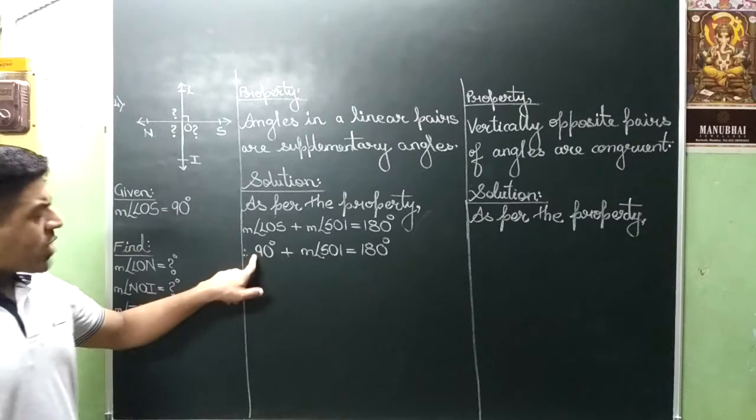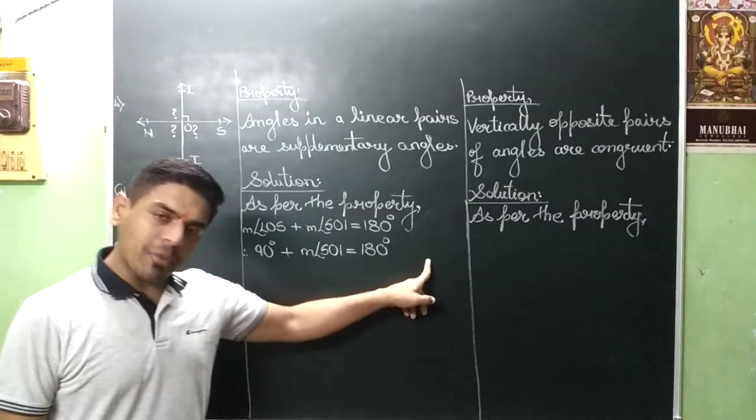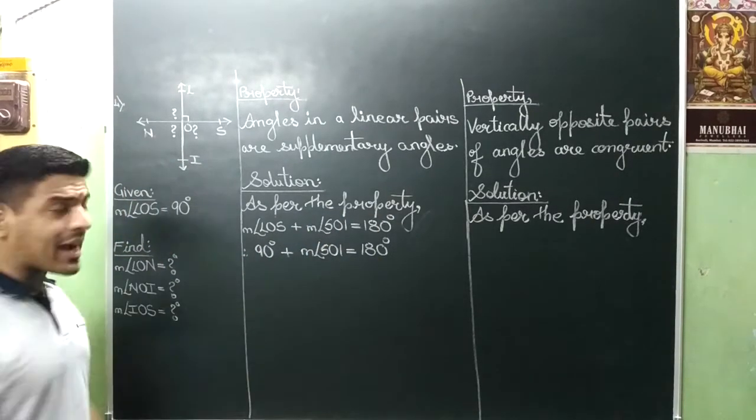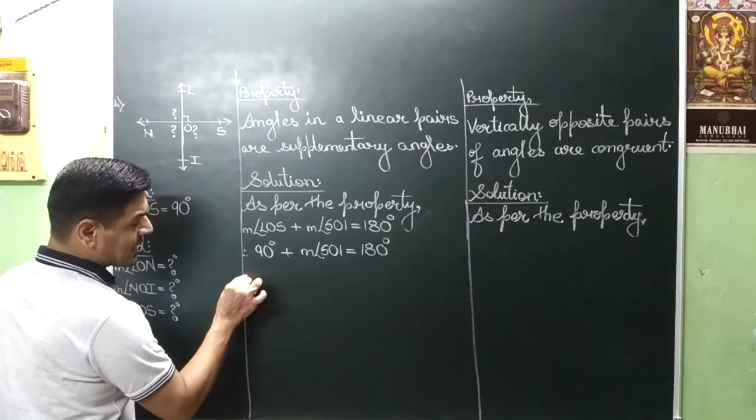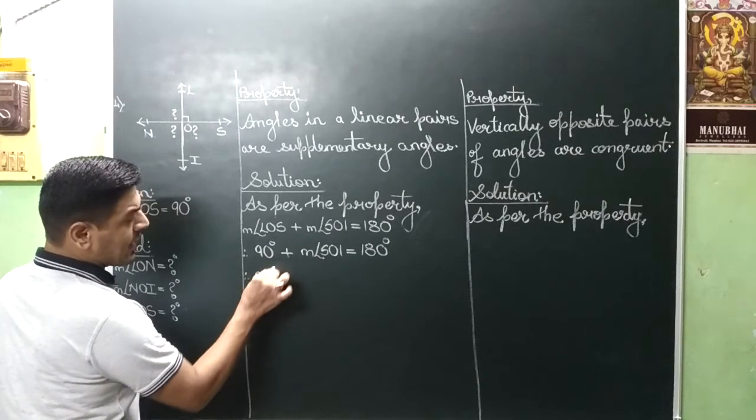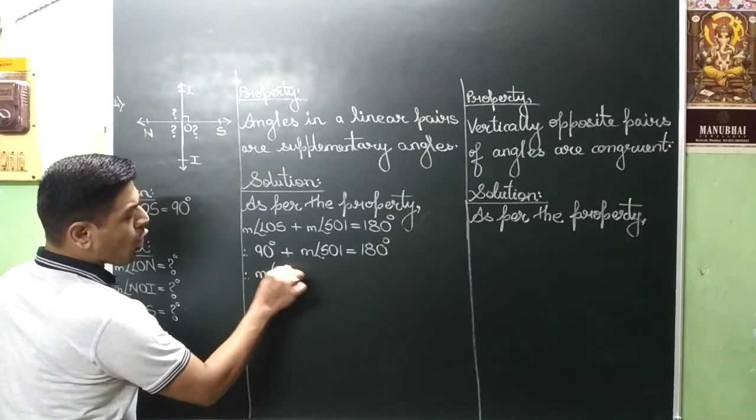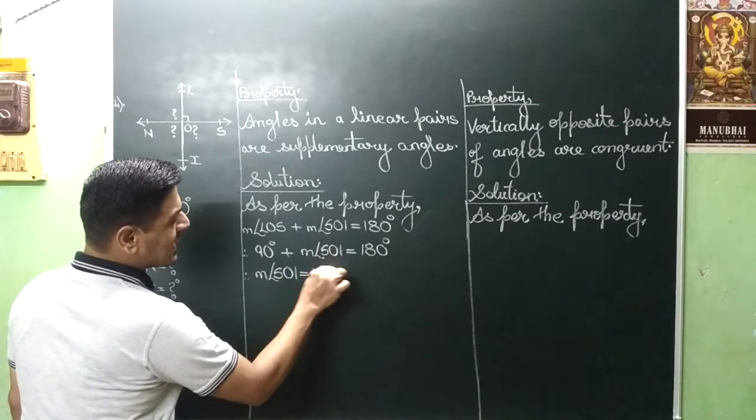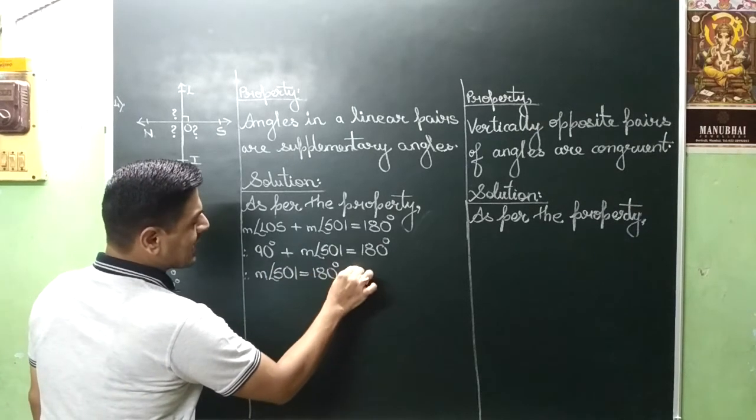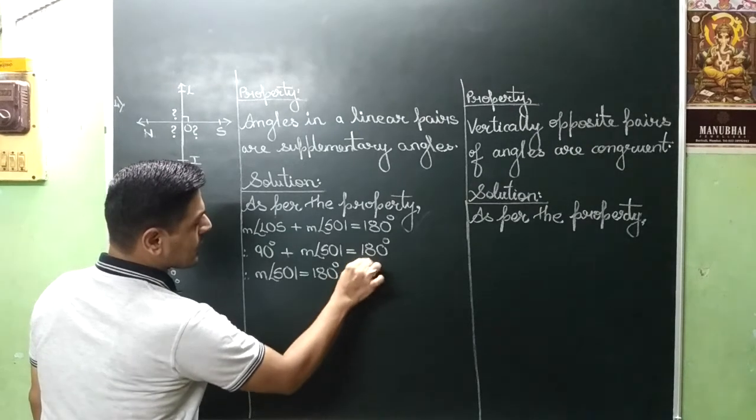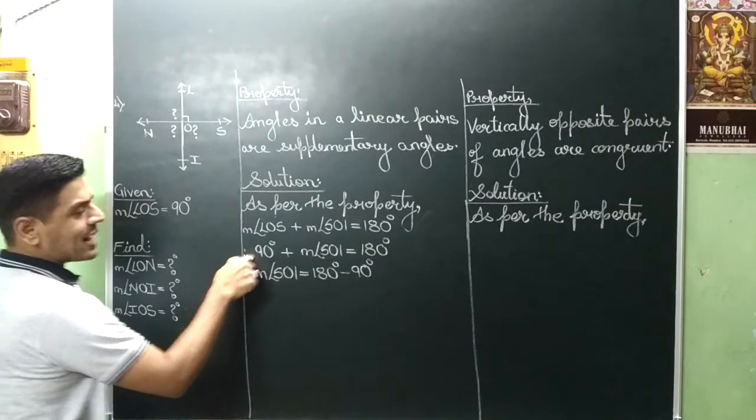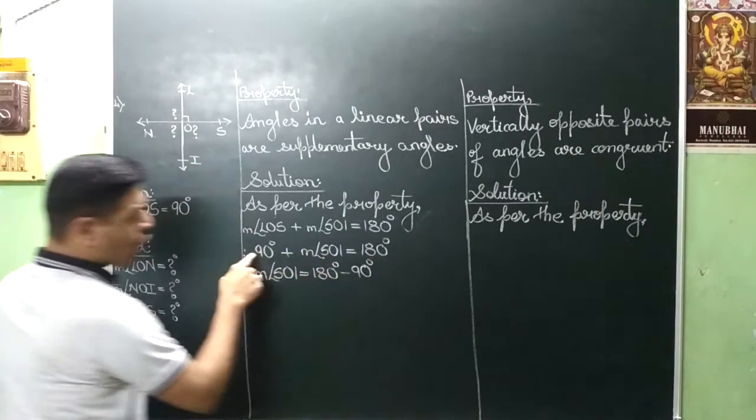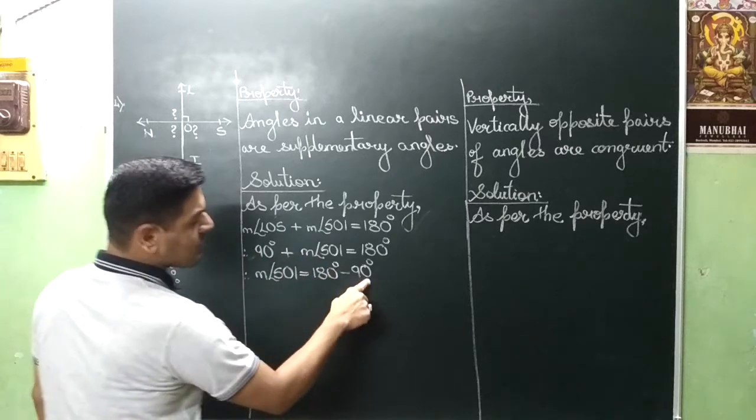Then positive 90 left meh chala jaega and it will become negative 90. So your next step will be measure angle SOI is equal to 180 degree minus 90 degree. From left it has went to right, from positive it has become negative.